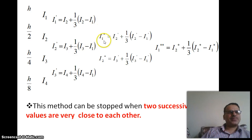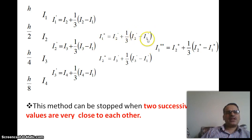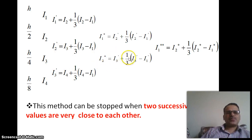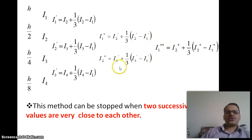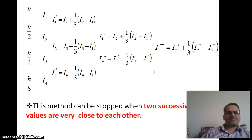Then for the next level, I1 star equals I2 dash plus 1/3 of (I2 dash minus I1 dash), and I2 star equals I3 dash plus 1/3 of (I2 dash minus I1 dash). In the next forward difference column, I1 double star equals I2 star plus 1/3 of (I2 star minus I1 star). This method can be stopped when two successive values are very close to each other.